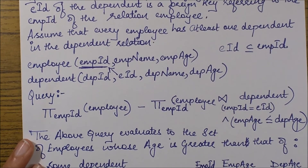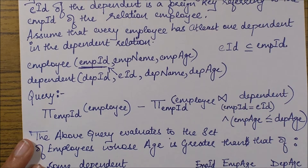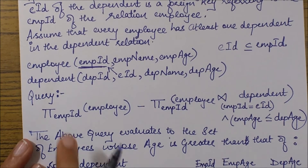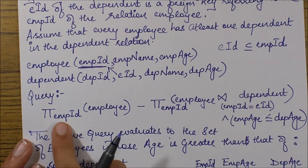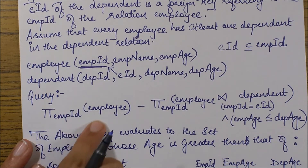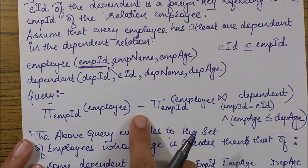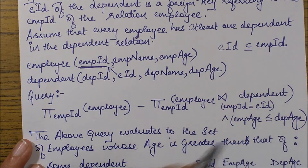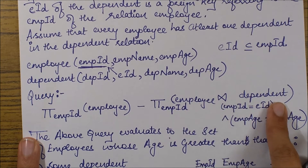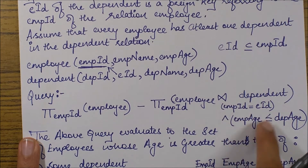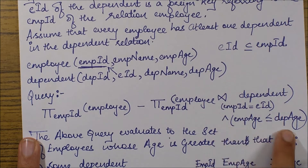Always note down the indirect things given in the question, like marking the primary key — it always helps while solving. The query is: pi of EMPID from Employee, minus pi of EMPID from an inner query. That inner query is Employee joined with Dependent where EMPID equals EID — this is an inner equi-join.